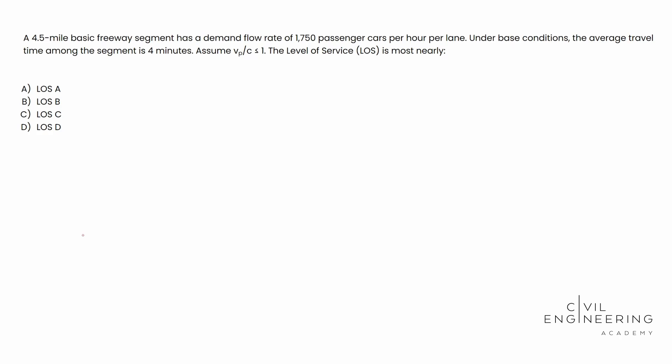All right, so here's what the problem says. A 4.5 mile basic freeway segment has a demand flow rate of 1,750 passenger cars per hour per lane. Under base conditions, the average travel time among the segment is four minutes. Assume V sub P over C is less than or equal to one. The level of service or LOS is most nearly what? And then we see our four options available to us, LOS A through D.